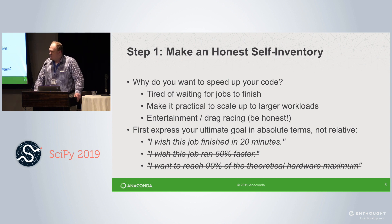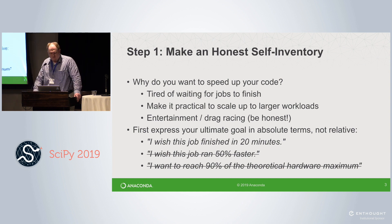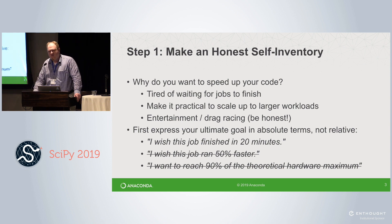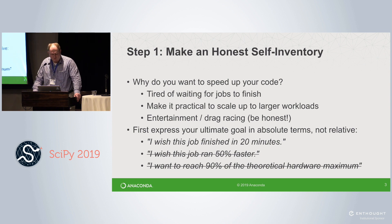Once you understand why you're trying to make your code go faster, it's good to express your ultimate goal in absolute terms, not relative terms. This keeps you focused on the goal. If your goal is to have jobs finish faster, you might want to phrase it as: this job I wish it took less than 20 minutes — rather than: I wish this job went 50% faster, or even worse: I want to reach 90% of the theoretical hardware maximum.